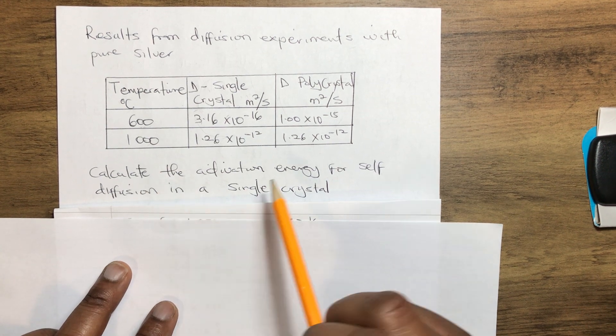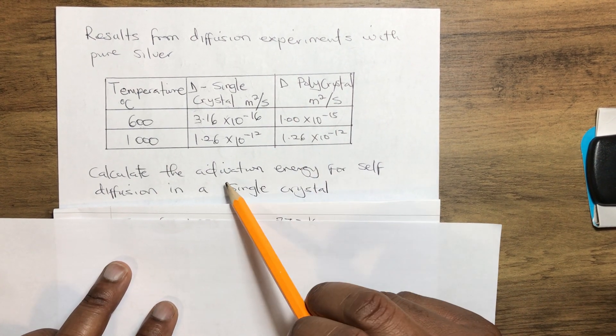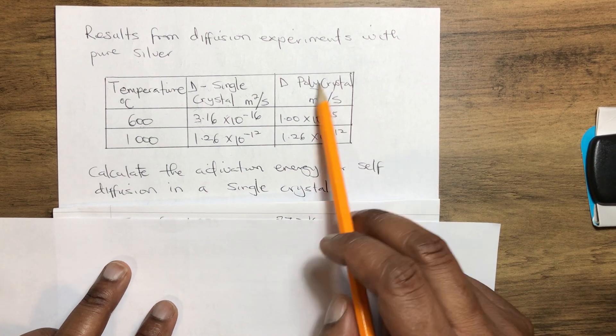So how do we calculate the activation energy of self-diffusion in a polycrystal?